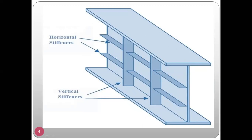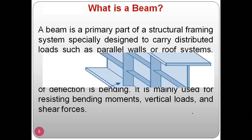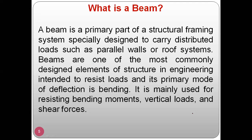Now let's define a beam and a girder and understand the difference. A beam is a primary part of the structural frame, specially designed to carry distributed loads — loads falling from walls or a roof system. Beams act as a structural framing system and are one of the most commonly designed elements in engineering, used to resist loads. The primary mode of deflection for a beam is bending.